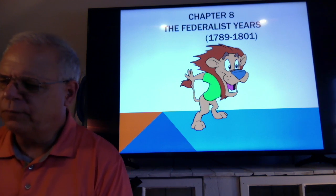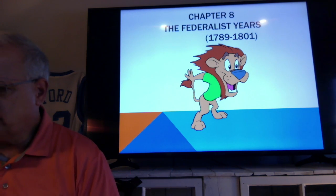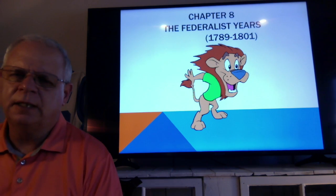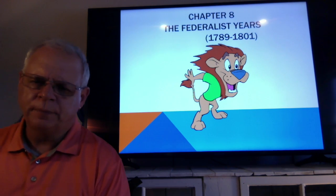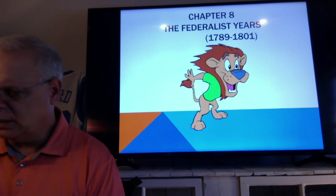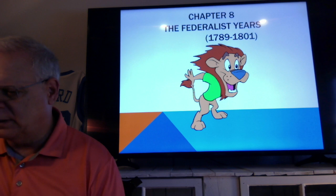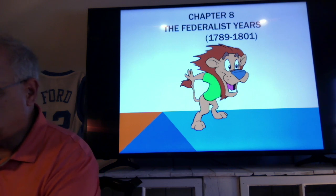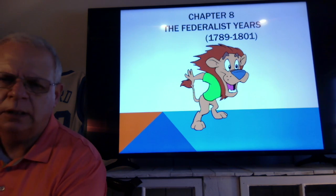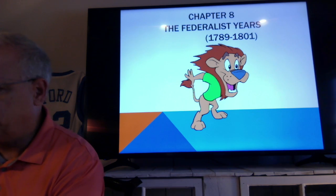This is Chapter 8, the Federalist Years, 1789 to 1801, basically covering the first three elections.